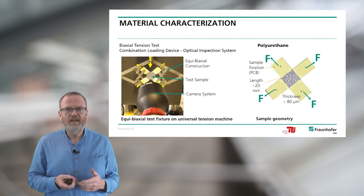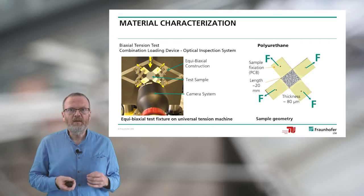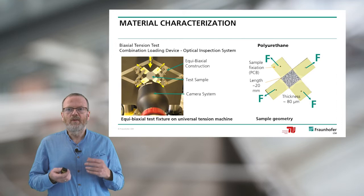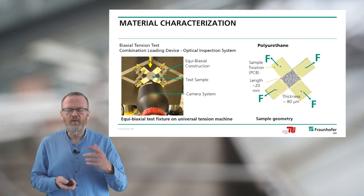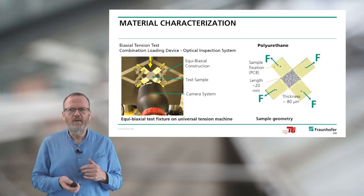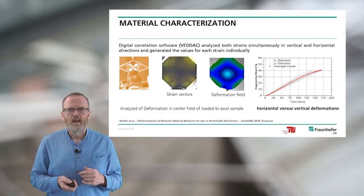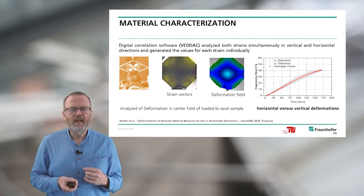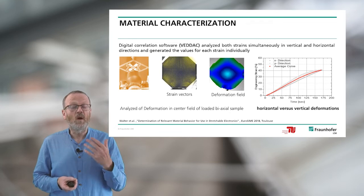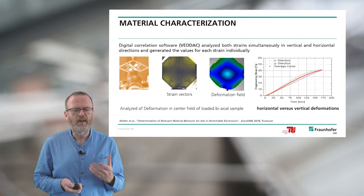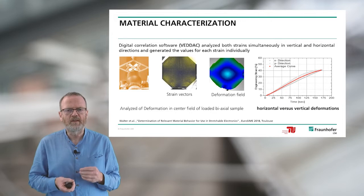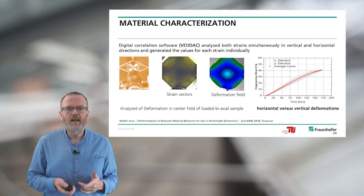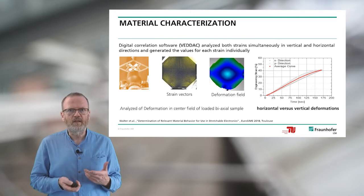You can see here we have a camera system with a test sample in the middle of the picture, and we have the equibiaxial scissor-like construction. On the right side, for analysis of the hyper-elastic properties of polyurethane, you can see the sample geometry with fixation on four corners and the polyurethane in the middle. We use an optical inspection system and pick up images for the deformation field, also using gray-scale correlation software called the FEDAC system, which allows us to analyze simultaneous deformation in two different directions — vertical and horizontal.